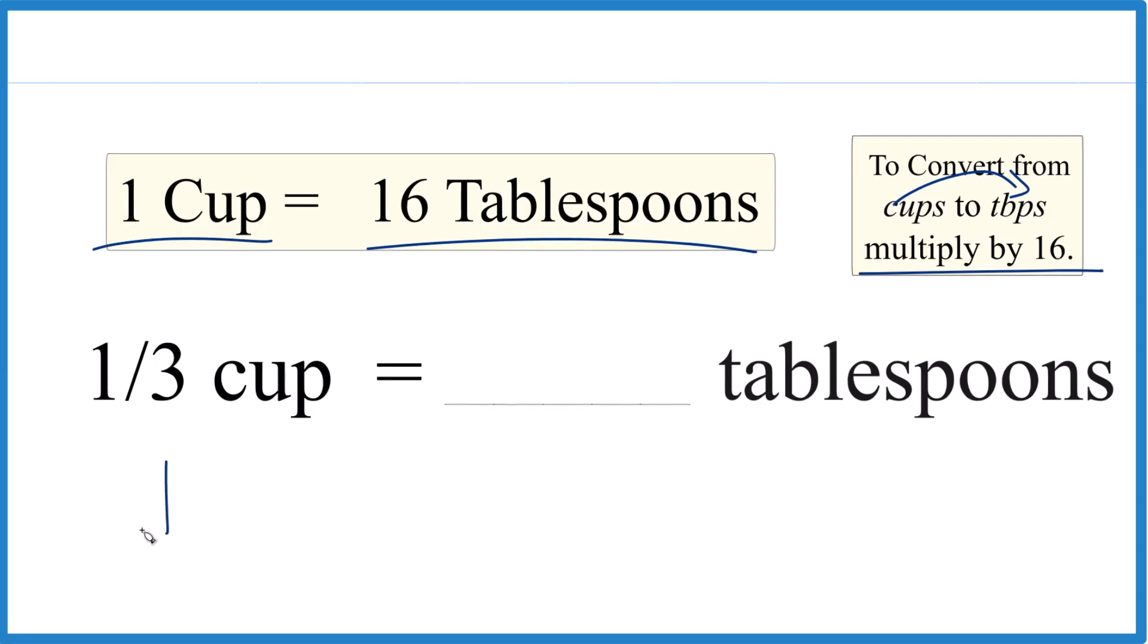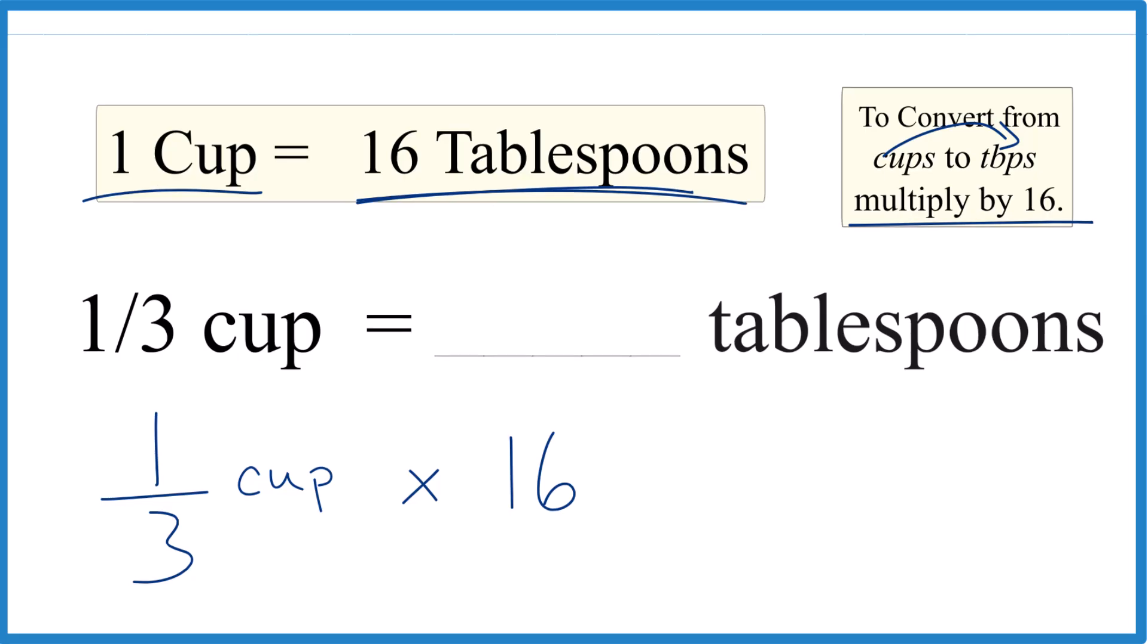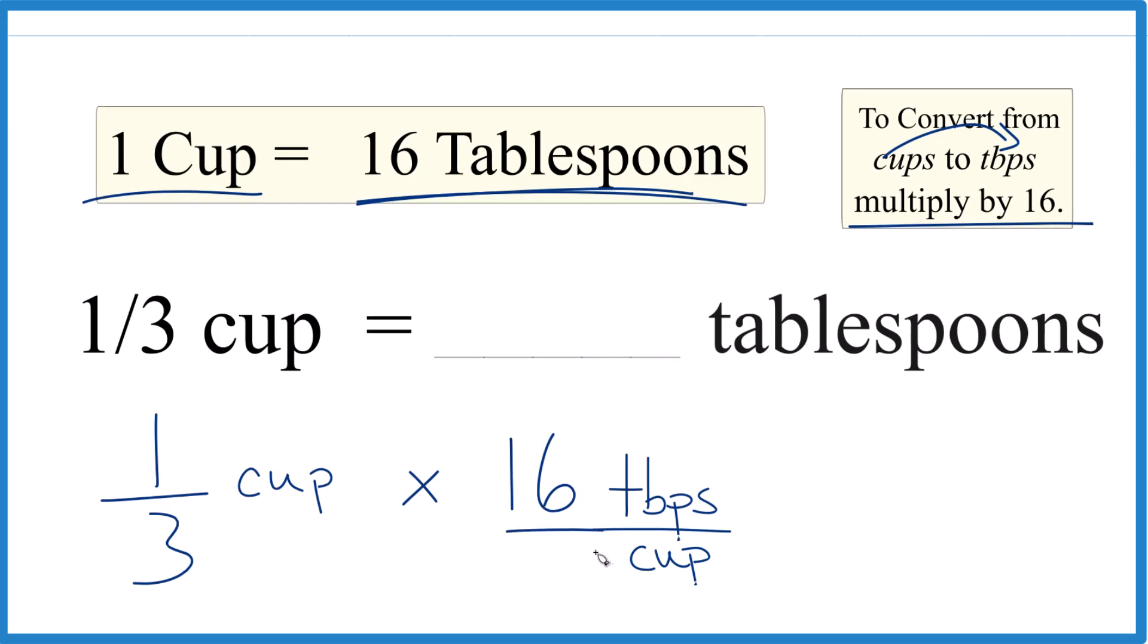So we take one third of a cup and we just multiply that by 16. But remember, it's 16 tablespoons in one cup. So we can put our units here as 16 tablespoons per cup. And you could even think of that as 16 tablespoons per one cup. So when we multiply, everything lines up.